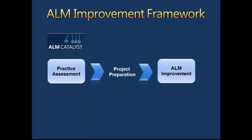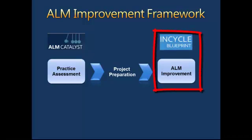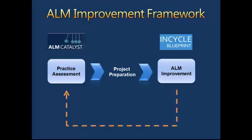Once an assessment has been completed, the next step calls for the creation of an improvement project. Not unlike other projects, an improvement project requires basic preparation work — for example, you have to assemble people, install tools, and secure project funding. Once you've determined what areas you would like to focus on, the template helps you create an improvement backlog and execute against it. After you've completed one or more improvement iterations or cycles, the framework suggests you come back, reassess, and once again feed your improvement backlog.